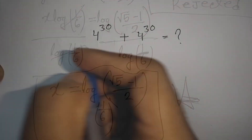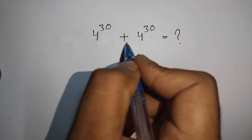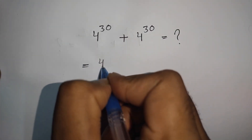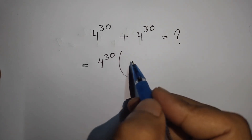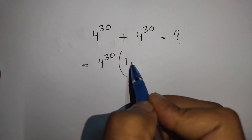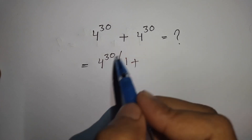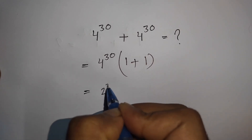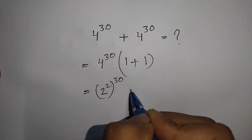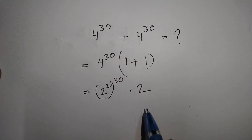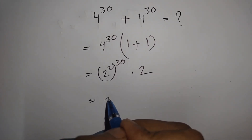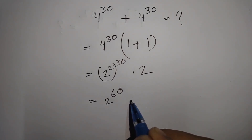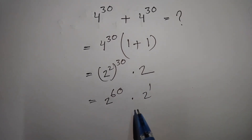Next example: how to solve 4^30 + 4^30. First, take 4^30 as a common factor: 4^30 × (1 + 1) = 4^30 × 2. Now 4^30 = (2²)^30 = 2^60, so we have 2^60 × 2 = 2^60 × 2^1.